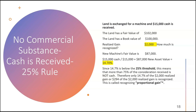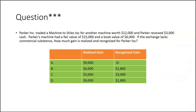Here's a practice question: Parker Inc traded a machine to Styles Inc for another machine worth $12,000 and received $3,000 cash. Parker's machine had a fair value of $15,000 and a book value of $6,000. If the exchange lacks commercial substance, how much gain is realized and recognized for Parker Inc? Leave your answer in the comments after you like and subscribe, as it helps the channel out a lot.